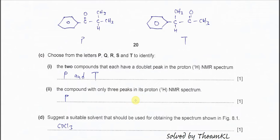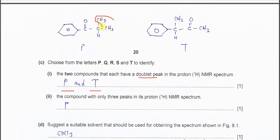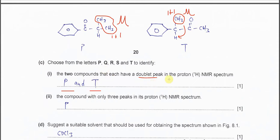Part C: choose from P, Q, R, S, T the two compounds that each have a doublet in the proton NMR. The answer is P and T. For P, the six protons as one group couple with this one proton — plus one — producing a doublet. For T, the CH3 protons also couple with one adjacent proton, so they also form a doublet. That's why P and T both produce a doublet peak in the proton NMR.